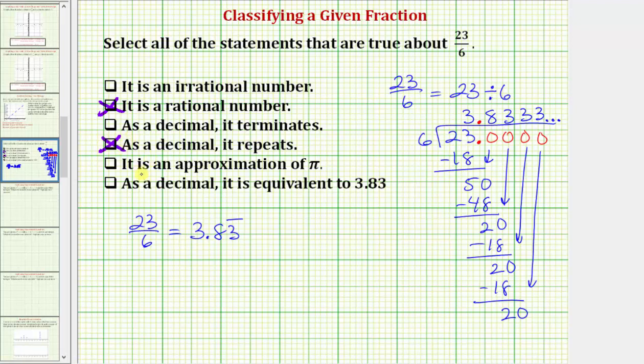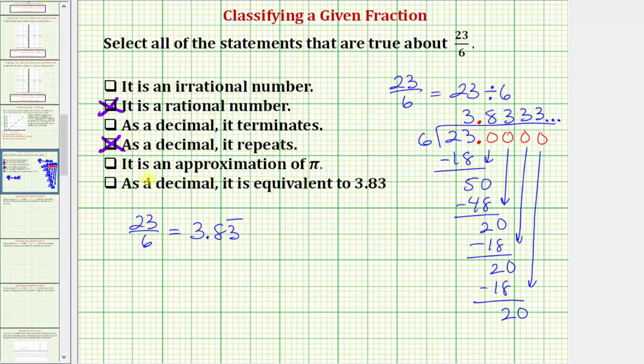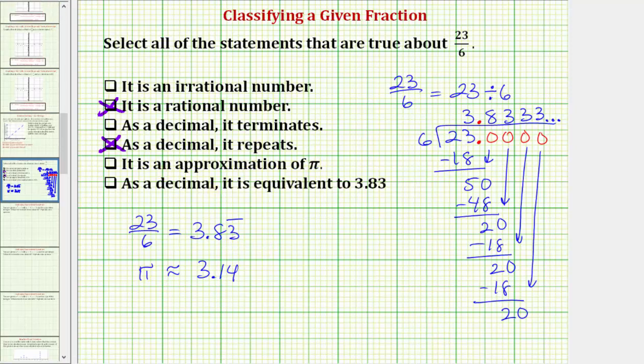The next statement, it is an approximation for pi. To determine if this statement is true, we need to remember that pi is approximately equal to 3.14, which obviously is not approximately 3.83 repeating, therefore it is not used as an approximation for pi. You may remember from our previous lesson, that 22/7 is often used as an approximation for pi, because 22/7 is approximately 3.14.